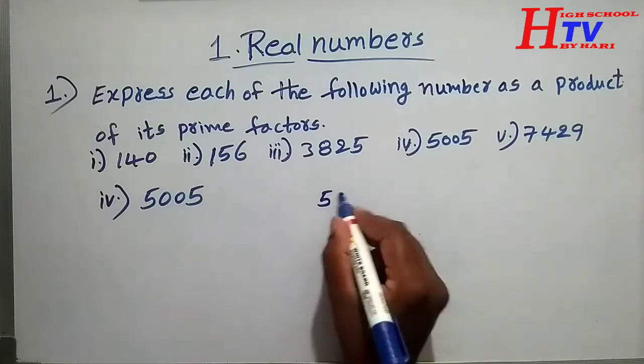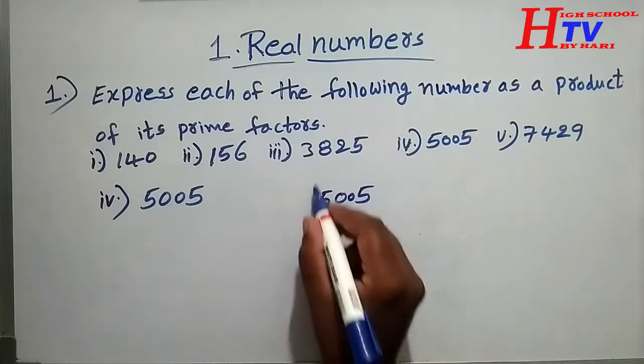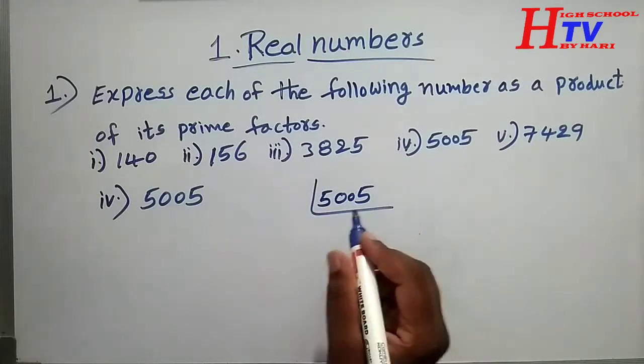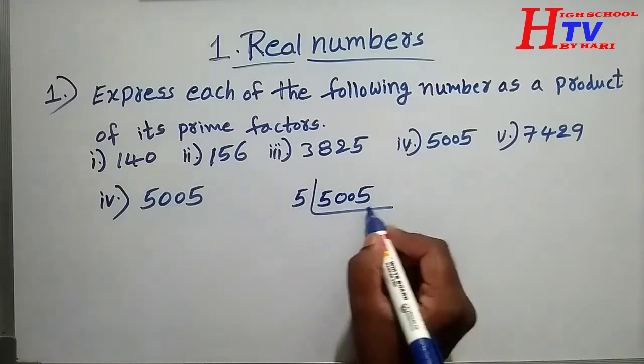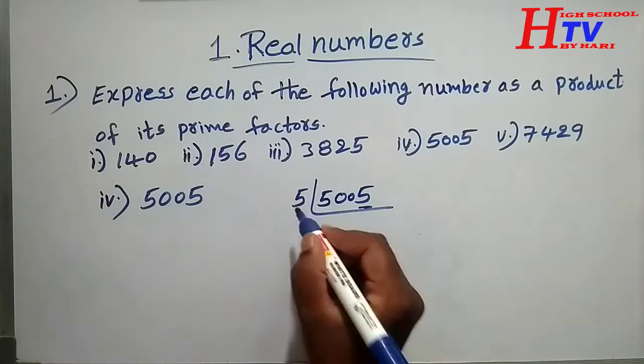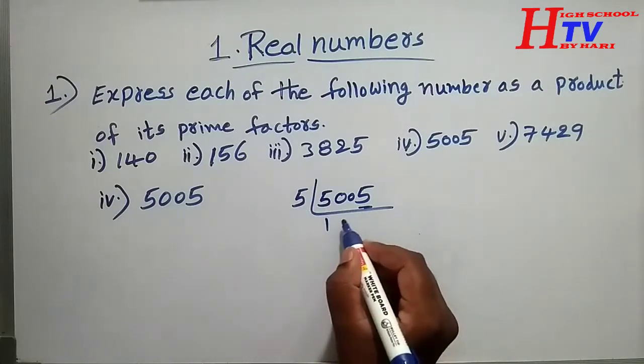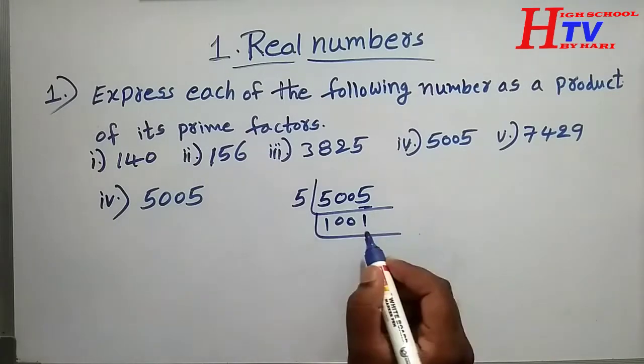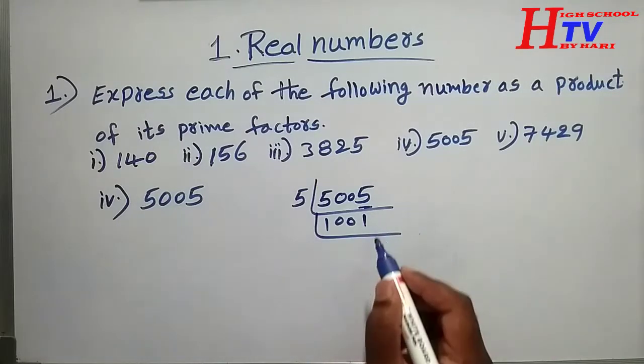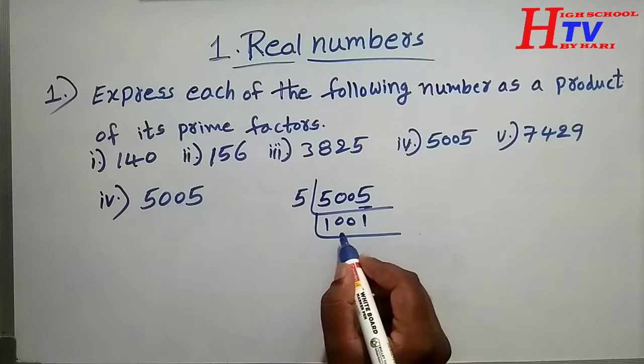First, find the LCM of five thousand five so that we can get the prime factors. The last digit is five, so it is divisible by five. Five goes into five thousand five. Five into one thousand and one.